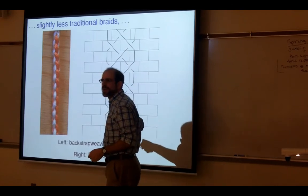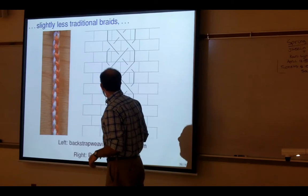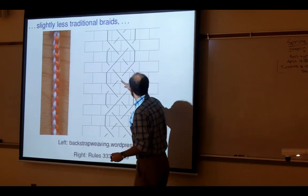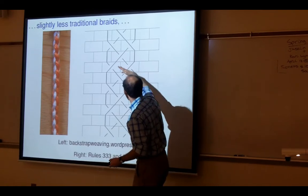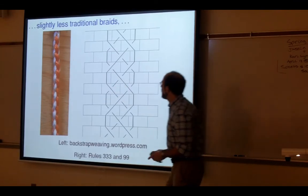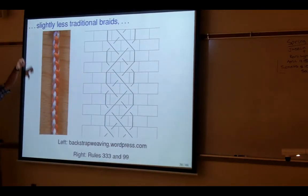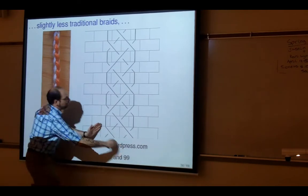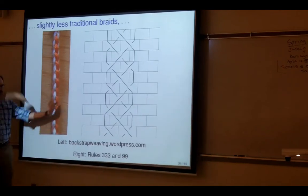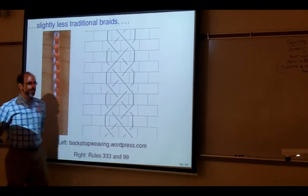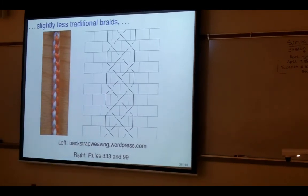I was looking for pictures online of these different braids. Has anybody seen this braid before? It has a large jump where you go over three strands and back under one, then under three, over three, under three. When you actually pull it tight it gives you a very round, three-dimensional braid because these long loops pull up — one to the front, the next one back. I was satisfied to see that I could model that with my rules.